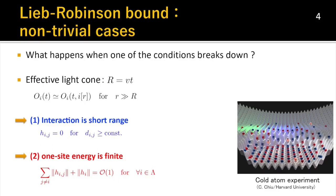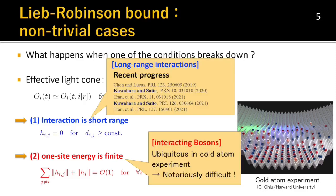The Lieb-Robinson Bound can be derived using these two conditions, but the conditions often break down, raising the natural question of what happens when one of them fails. In particular, we are interested in the form of the effective light cone. When the first condition breaks down, the interaction becomes long-range, and the form of the effective light cone strongly depends on the decay rate of the interaction. Through recent progress in these three years, various universal properties have been revealed. On the other hand, a typical example of breaking the second condition is the interacting boson systems. Until now, the Lieb-Robinson Bound in boson systems has been an extremely challenging problem. Unfortunately, such boson systems are ubiquitous in cold-atom experiments. In this talk, the breakdown of the second condition is our main target.